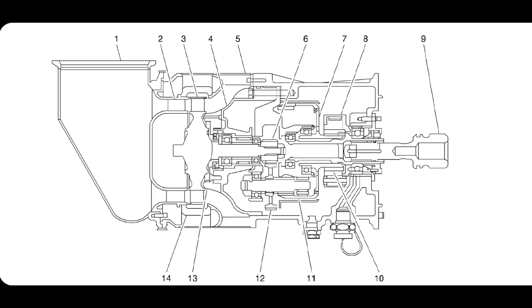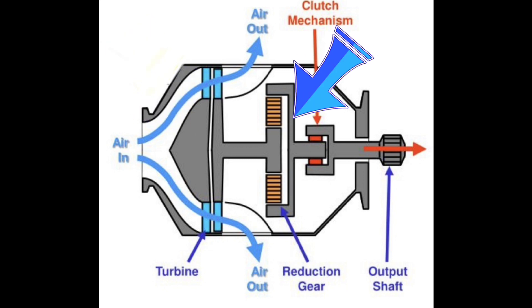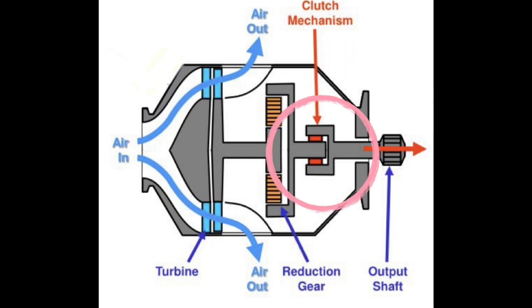This is how the starter looks inside, but for the explanation I'll use a simpler scheme. As mentioned before, the starter consists of a turbine, reduction gear, and centrifugal clutch.